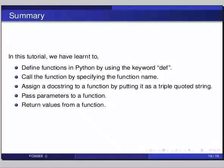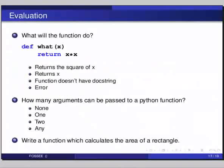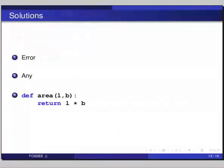Here are some self-assessment questions. First: what will the function do? Given def what(x), return x star x — the answer is it will result in an error due to wrong syntax in defining the function; the function line should always end with a colon. Second: any number of arguments can be passed to a Python function. Third: to calculate area of a rectangle, define def area(l, b), colon, return l star b.